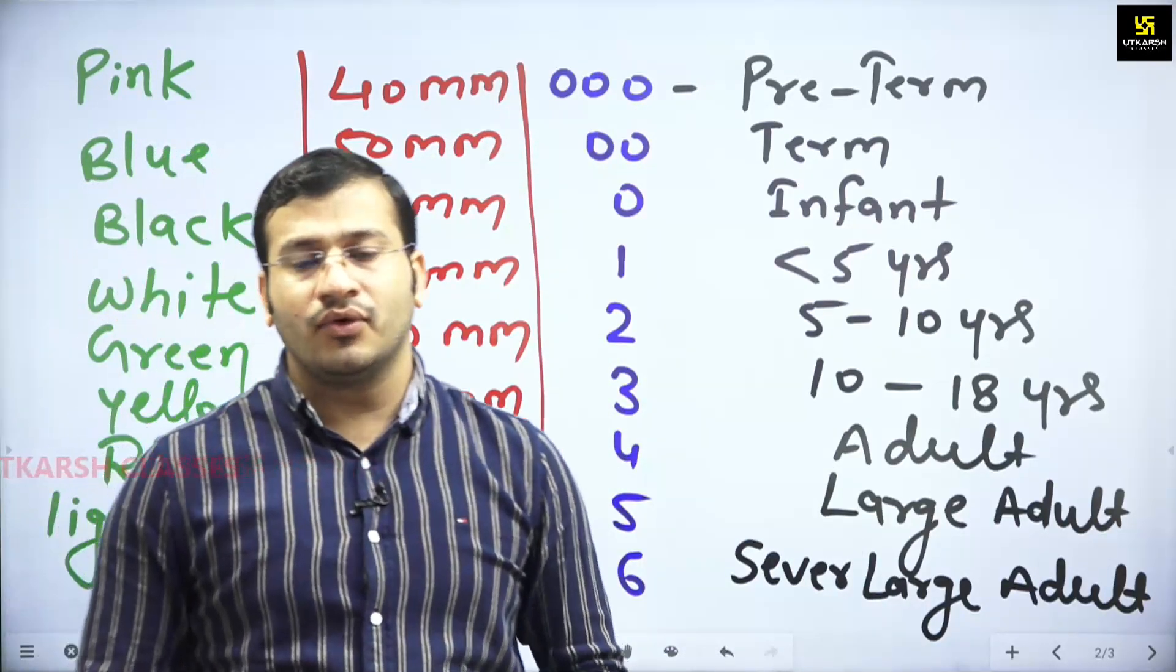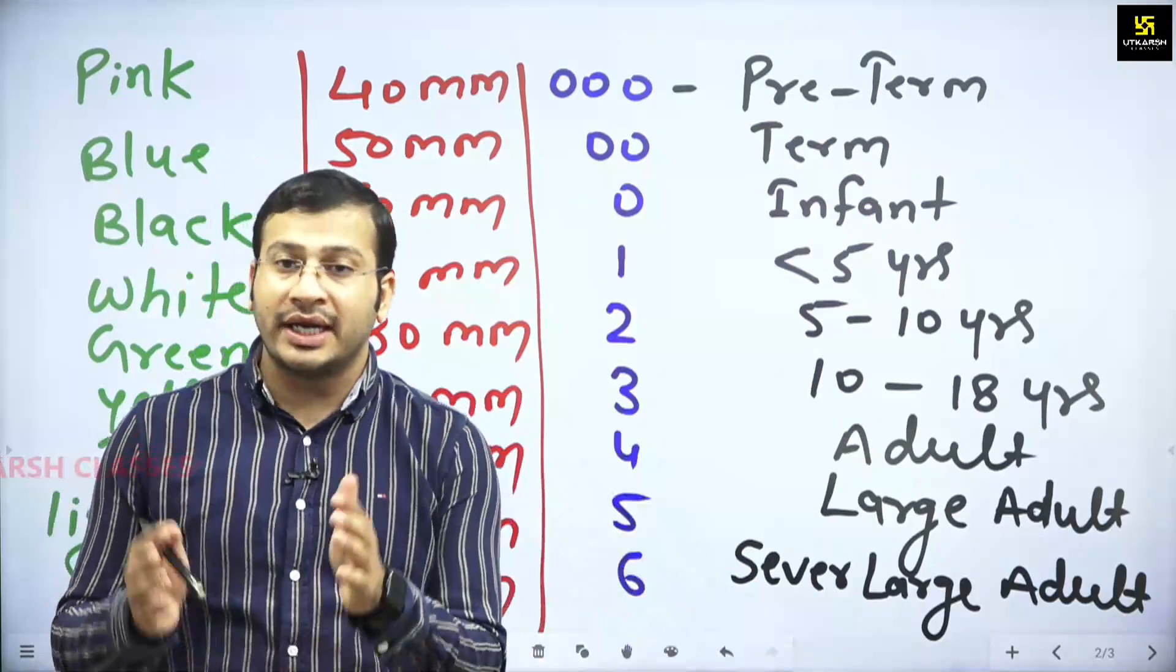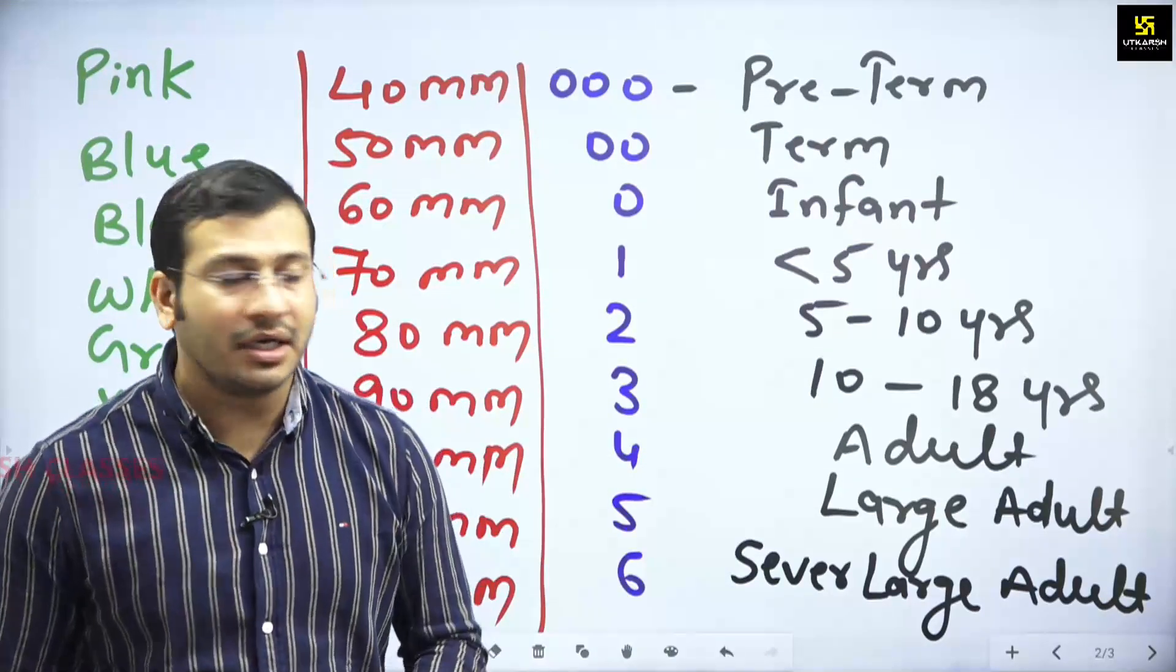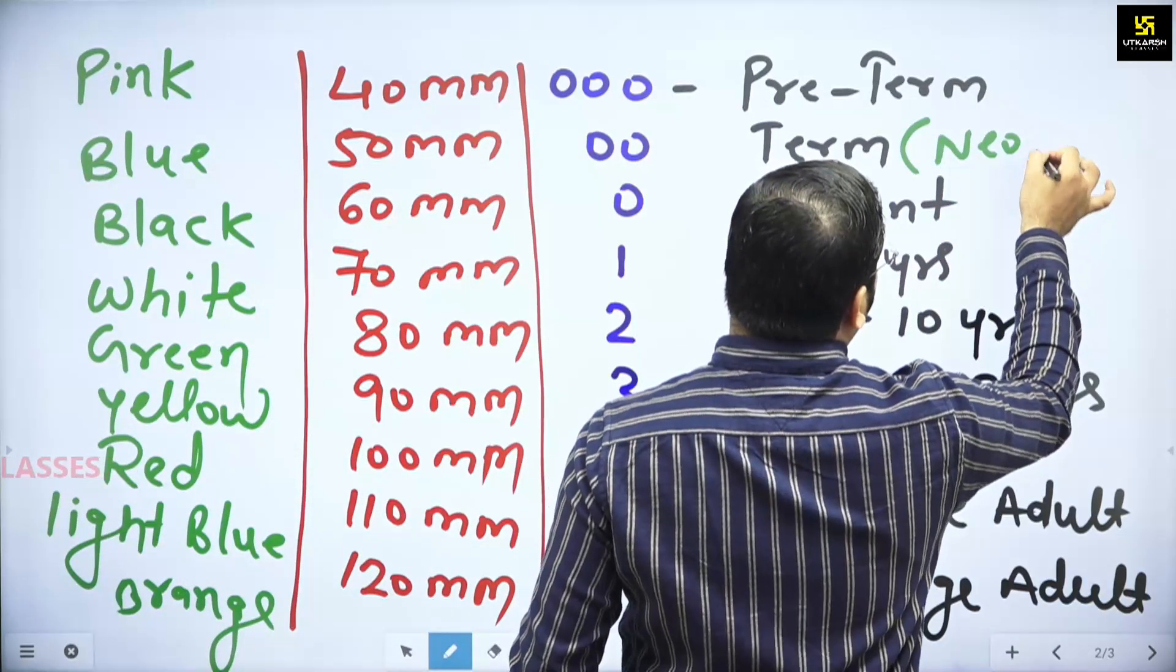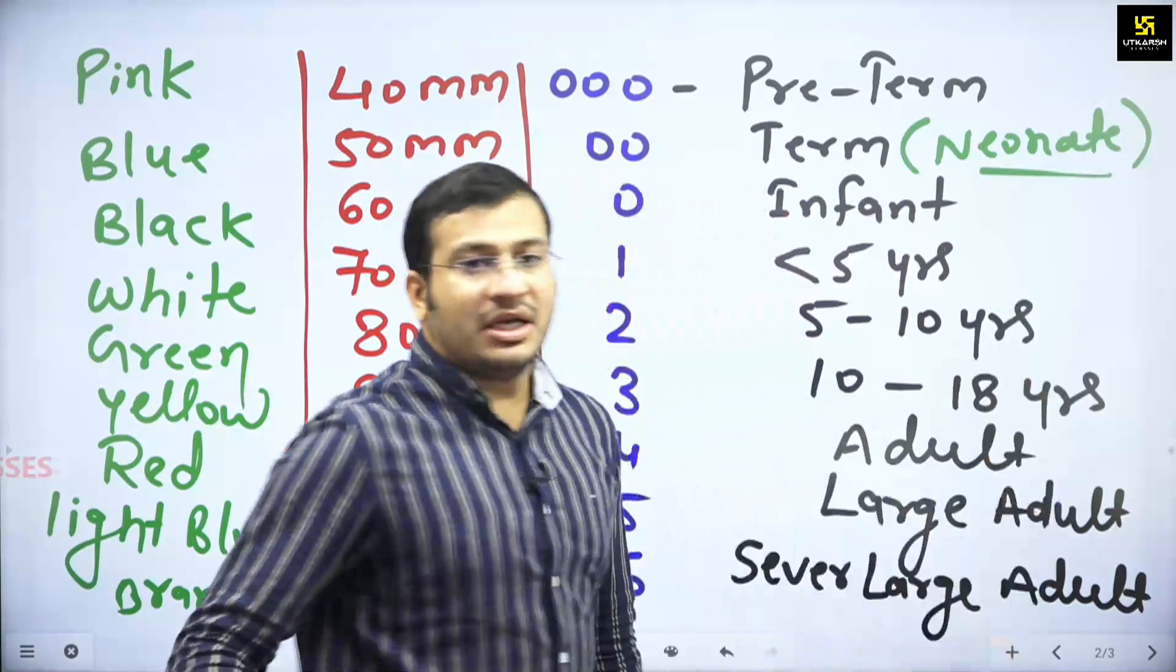Orange size 40 mm to 120 mm: 40, 50, 60, 70, 80, 90, 100, 110, 120. Sizes 000, 00, 0, 1, 2, 3, 4, 5, 6. First of all, who will be pre-term, term or neonate. This is neonate or neonate. This is infant.